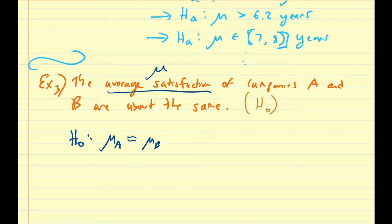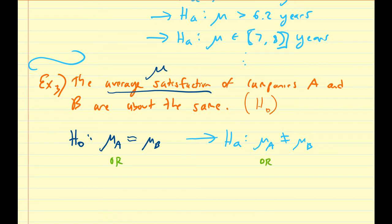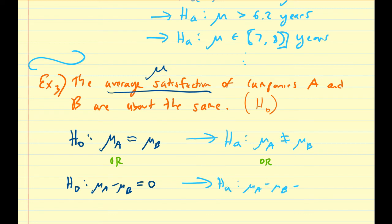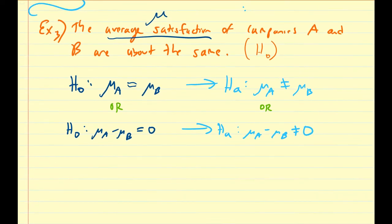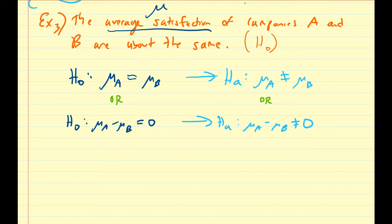What could be an alternative hypothesis here? The easiest one is saying that mu_A is not equal to, or not approximately equal to, mu_B. You can also look at this from a different angle by subtracting mu_B from both sides: the null becomes mu_A minus mu_B equals zero, and the equivalent alternative hypothesis is that mu_A minus mu_B is not equal to zero.